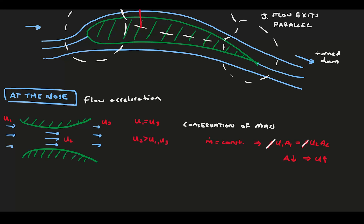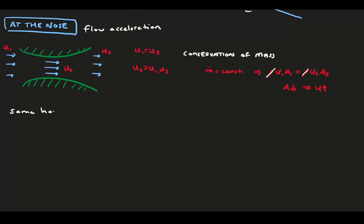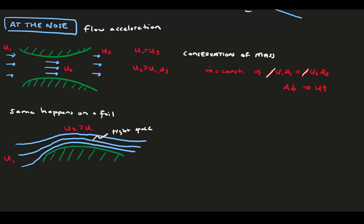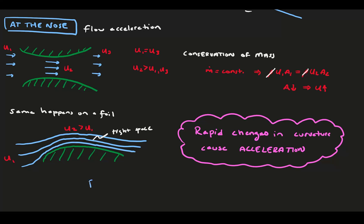This same phenomena happens at the front of our foil, despite our channel not having a roof. The rapid change in curvature results in the same amount of fluid needing to pass through a smaller space, so flow accelerates to compensate for that. So the front curvature acts to speed the flow up, and the Bernoulli principle tells us that the pressure must go down as a result. This flow acceleration is the primary reason for the low pressure region over the foil.